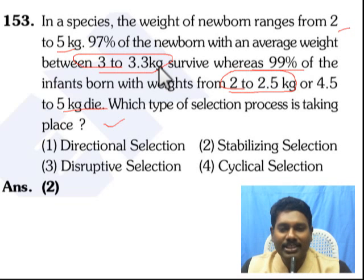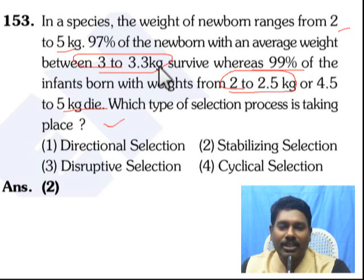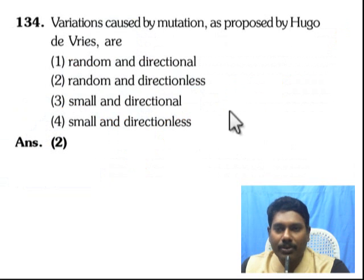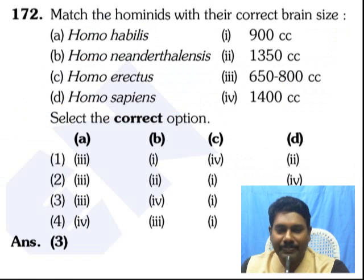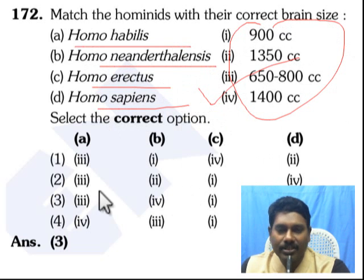If selection favors only one extreme — say 4 to 5 kg — that is directional selection. If both extremes such as 2 to 2.5 kg and 4 to 4.5 kg are favored over the middle, that is disruptive selection. These are application-oriented questions on the types of natural selection.